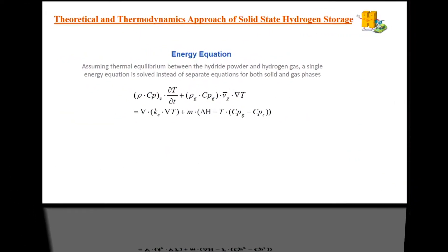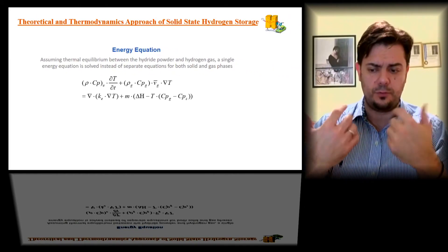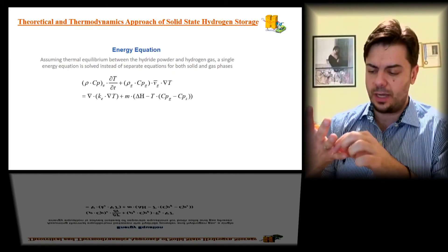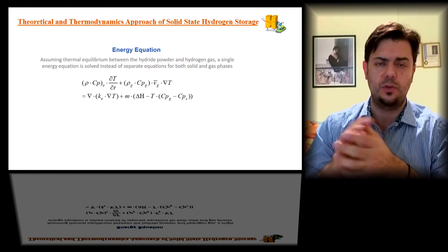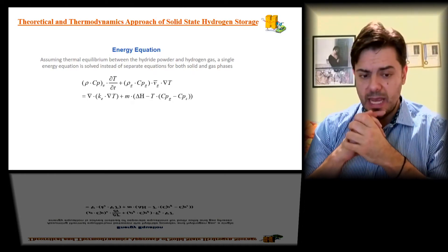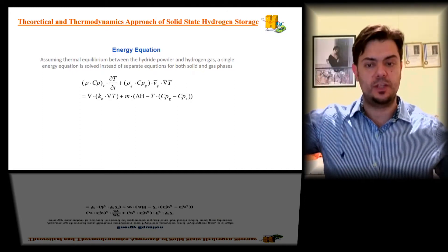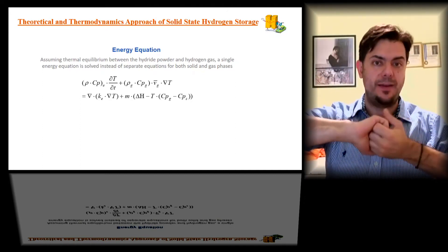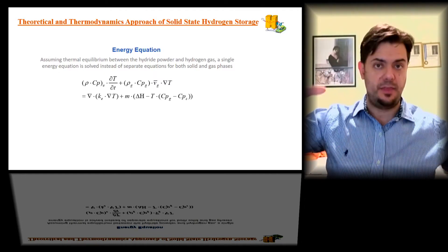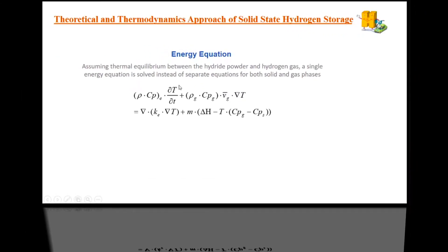Based on those assumptions, we start creating our model. For solid-state hydrogen storage, we combine three main equations: the energy equation, the momentum equation, and the mass equation. Starting with the energy equation, and assuming local thermal equilibrium between the gas and solid state, we are able to combine them into one equation instead of using two separate ones.